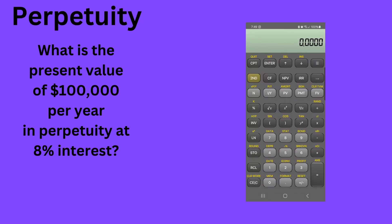Today we are going over how to value a perpetuity. In this example, you've only got two variables. What is the question? The question is, what is the value of a perpetuity that has a hundred thousand dollars per year at eight percent interest?